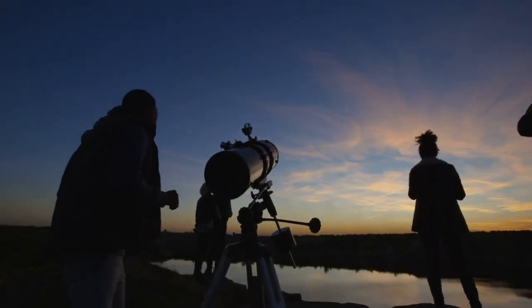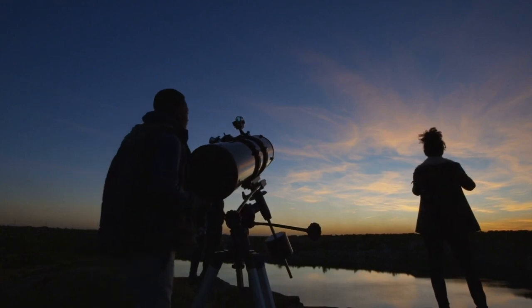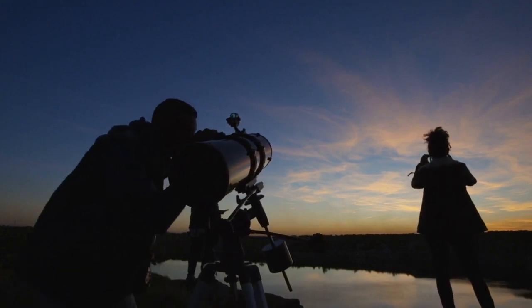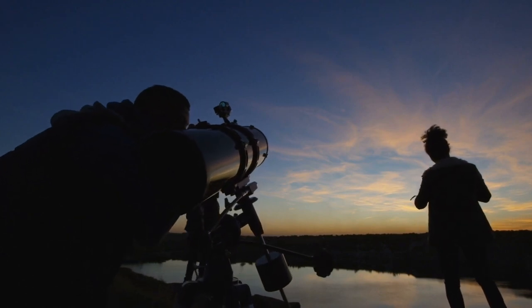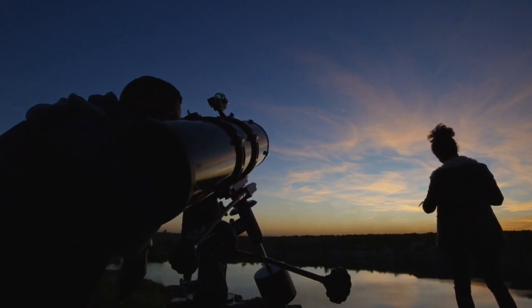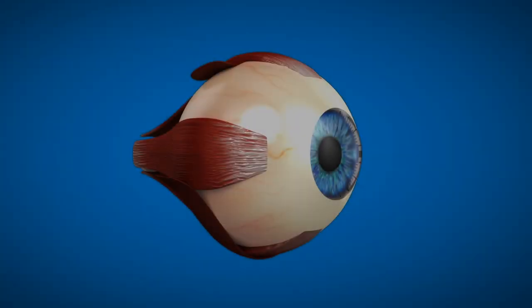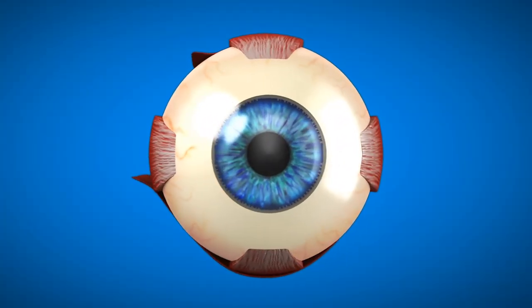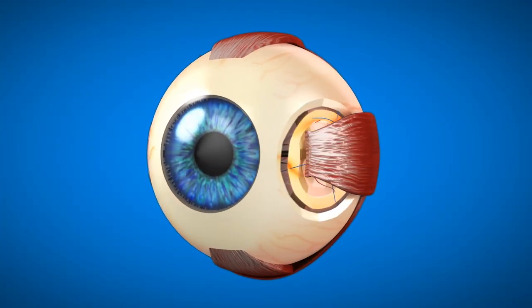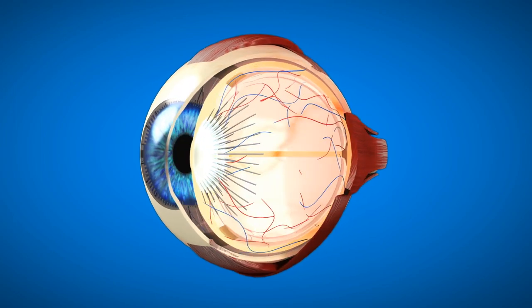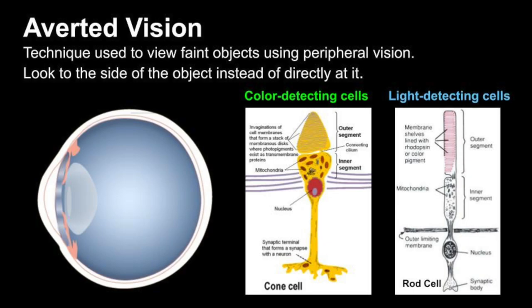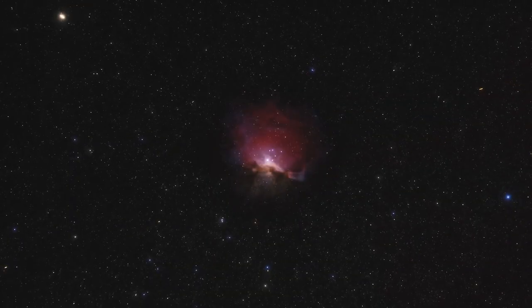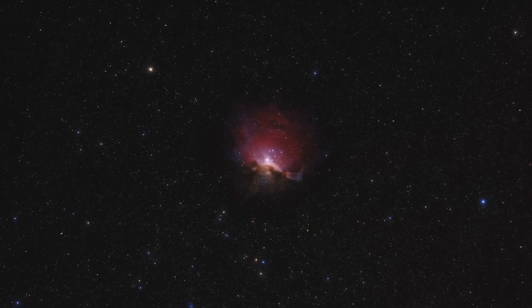Averted vision is a technique used in observational astronomy to enhance the visibility of faint objects — this could be a dim star, a galaxy, or a star cluster. This technique takes advantage of where the light-sensitive cells are located in the human eye. In this video, we will examine the structure of the human eye, the function of the two types of cells that detect color and light, and identify the best celestial objects to practice this technique with.